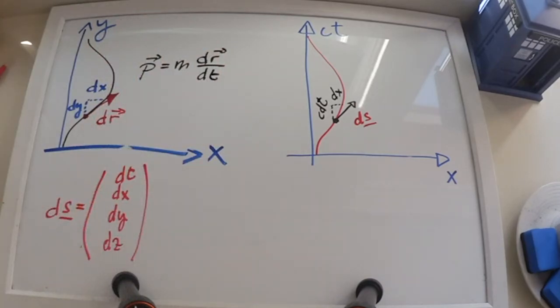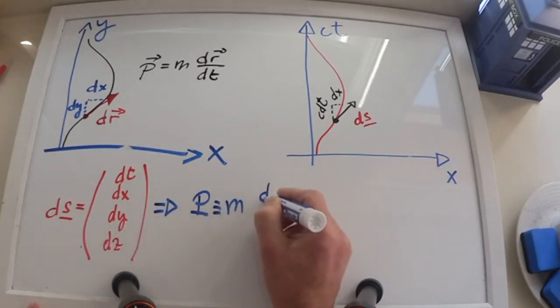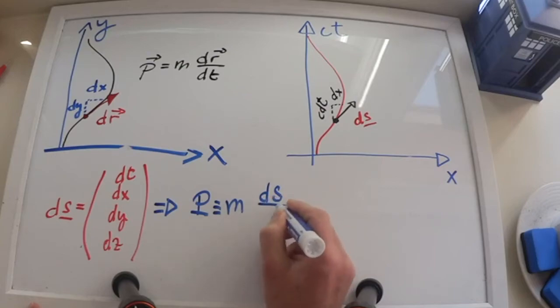So, relativistic momentum will have to be the mass times the derivative of the spacetime displacement ds with respect to time. But which time? ds is an invariant, but if we divide it by dt, being t a specific reference frame, which is that reference frame? Instead of using dt, we will be using d tau, the proper time of the particle.